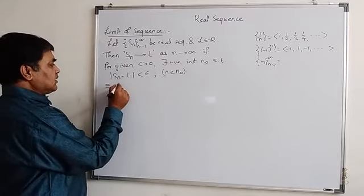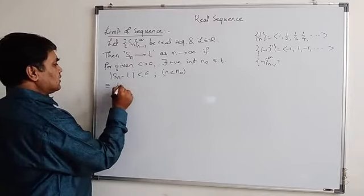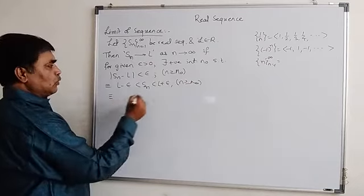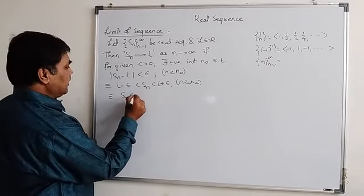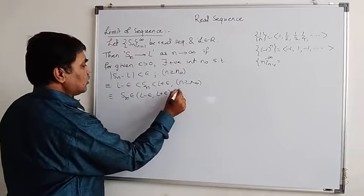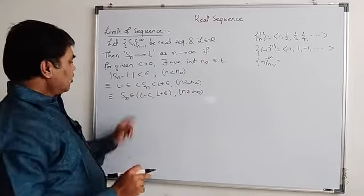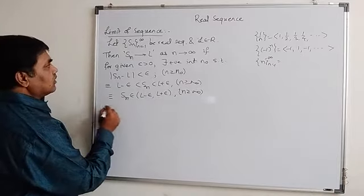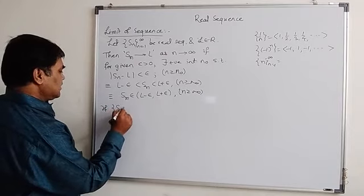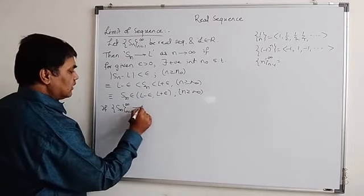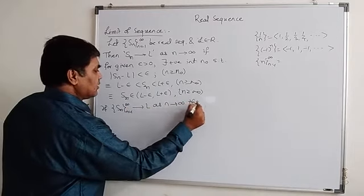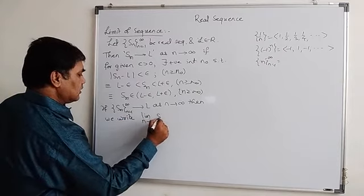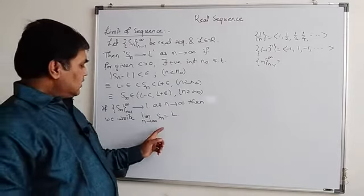This is equivalent to L − epsilon < s_n < L + epsilon for any n greater than n₀. Again, this is equivalent to s_n belonging to the open interval (L − epsilon, L + epsilon) for n greater than or equal to n₀. So after n₀, all s_n lie in the interval (L − epsilon, L + epsilon). If sequence s_n tends to L as n tends to infinity, then we write: limit as n tends to infinity of s_n equals L. This is the definition of limit.